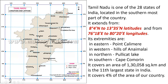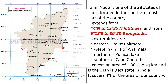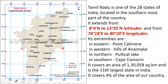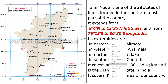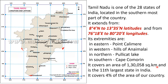The eastern extremis of Tamil Nadu is the Point of Kalimur, the western extremis is the hills of Anai Malai, the northern extremis is Pulikat Lake, and in the south is Cape Komorin, which we call Kanyakumari. These are the four extremes of Tamil Nadu. It covers an area of 1,30,058 square kilometers. Tamil Nadu is the 11th largest state in India, covering 4% of the area of our country.